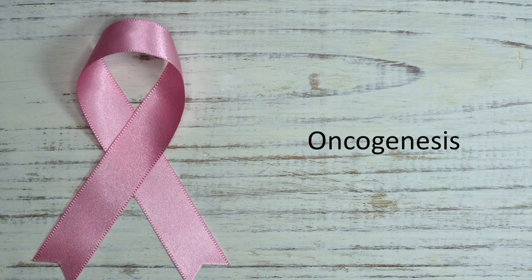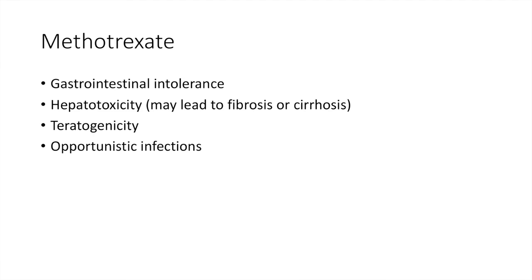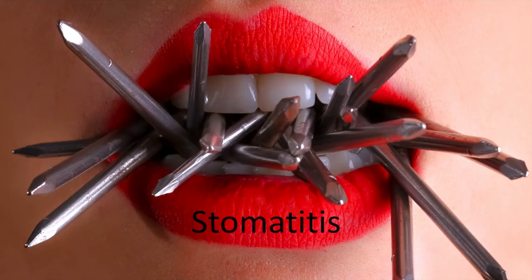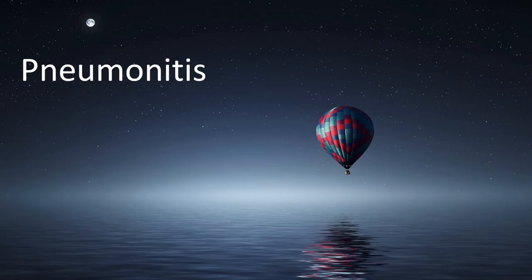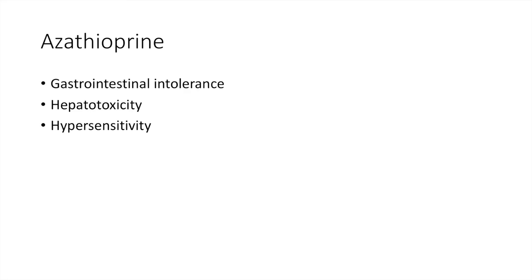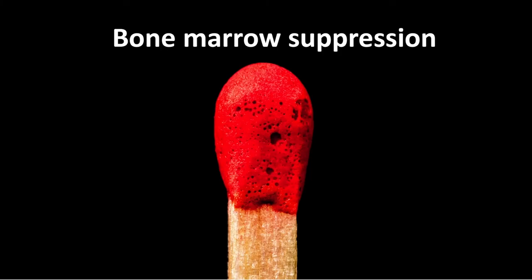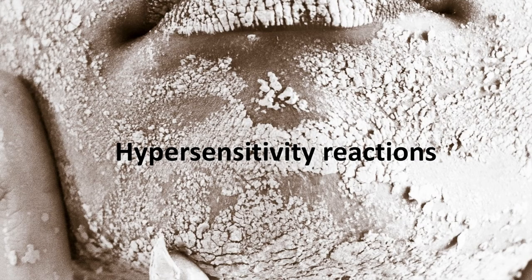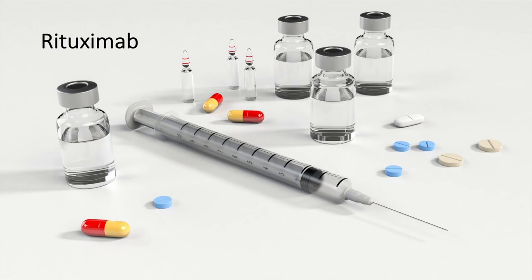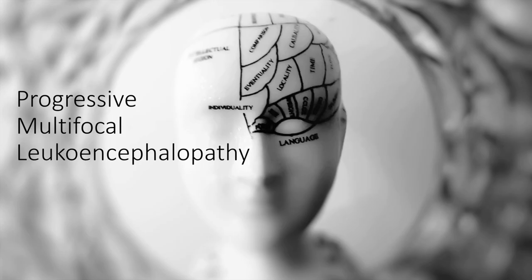Methotrexate may cause gastrointestinal intolerance, hepatotoxicity, opportunistic infections, stomatitis, and pneumonitis. Azathioprine can cause hepatotoxicity, bone marrow suppression, and hypersensitivity reactions. Finally, rituximab can cause cutaneous and infusion-related reactions and can also cause reactivation of progressive multifocal leukoencephalopathy caused by the JC virus.